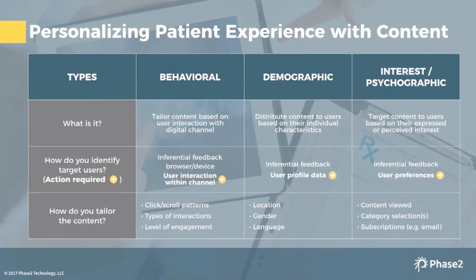Demographic-based personalization might include location shared via geolocation, a selected language preference, or information like gender if they've filled out a profile. And interest-based personalization goes back to the idea of signing up for an e-newsletter on a specific category — you can also track the types of content they're viewing and engaging with.